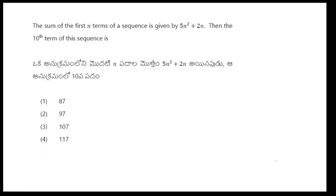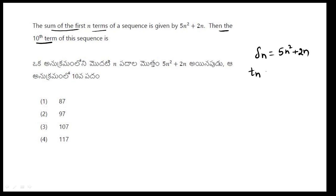This question came from a previous paper. The sum of first n terms S(n) is given as 5n squared plus 2n. We need to find the 10th term.